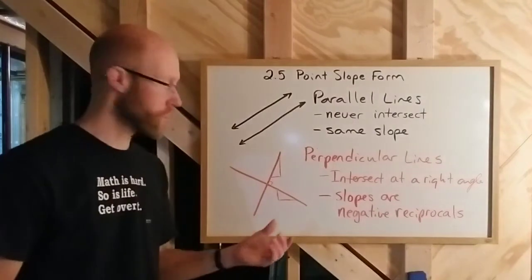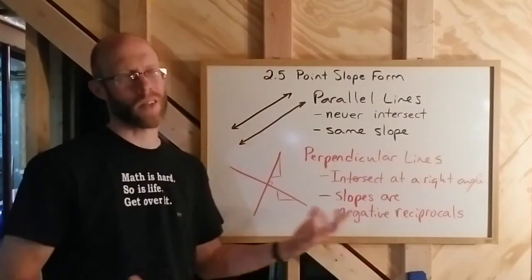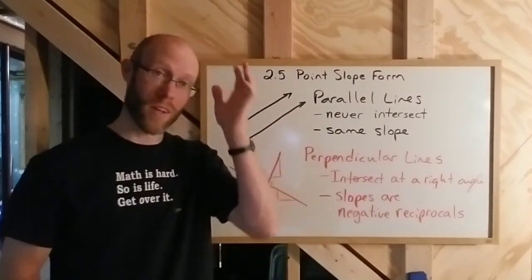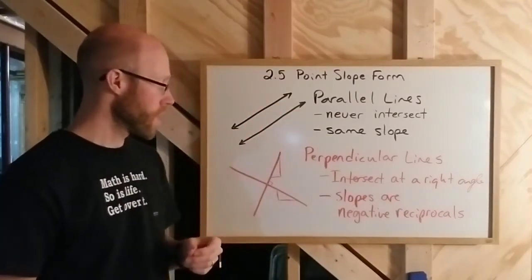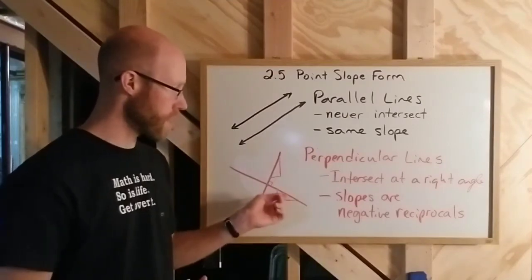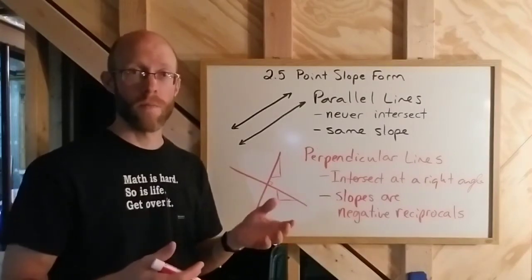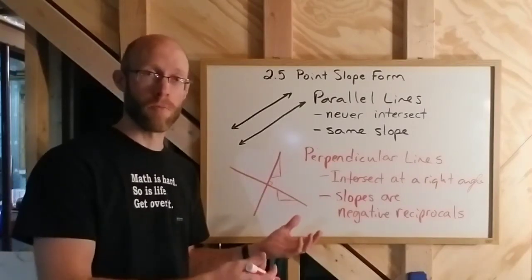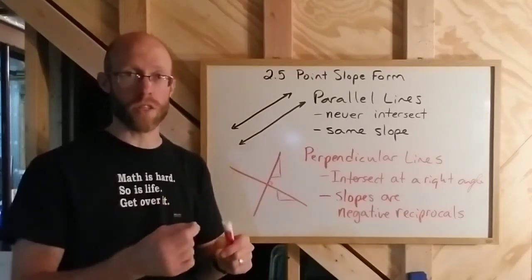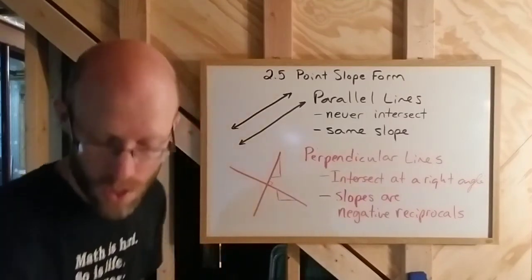Some textbooks and instructors will use the term 'opposite reciprocals' instead of 'negative reciprocals' — both are acceptable. So if one of your slopes was positive three-fifths, then the perpendicular slope would be negative five-thirds. You change the sign and flip the fraction — both have to happen.